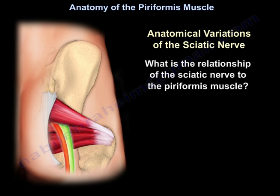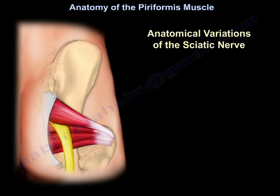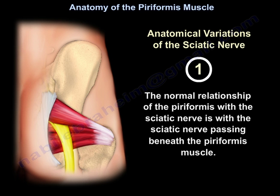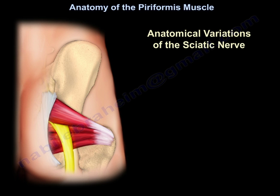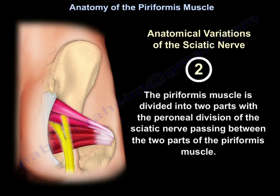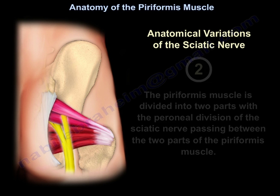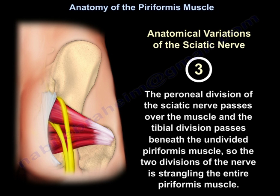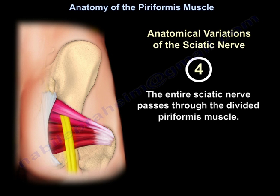The first type is the normal relationship, with the sciatic nerve passing beneath the Piriformis Muscle. The second type is the Piriformis divided into two parts, with the peroneal division of the sciatic nerve passing between the two parts. The third type is the peroneal division passing over the muscle while the tibial division passes beneath the undivided Piriformis, so the two divisions straddle the entire Piriformis Muscle. The fourth type is the entire nerve passing through the divided Piriformis Muscle.